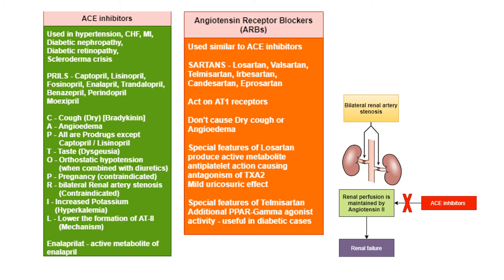Angiotensin receptor blockers (ARBs) are used similarly to ACE inhibitors. The code is 'sartan': losartan, valsartan, telmisartan, irbesartan, candesartan, and eprosartan. They act at angiotensin type 1 receptors and do not cause dry cough or angioedema. Special features of losartan include an active metabolite, antiplatelet action via thromboxane A2 antagonism, and a mild uricosuric effect. Telmisartan has additional PPAR-gamma agonist activity, useful in diabetic cases.